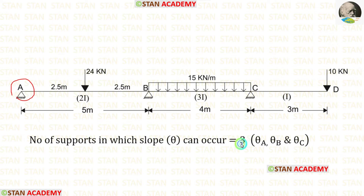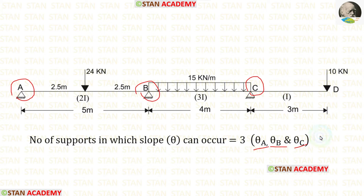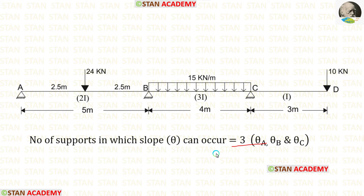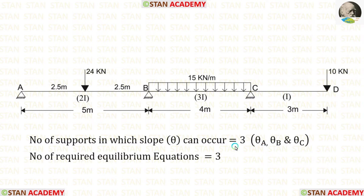At point A there is theta A, at point B there is theta B, and at point C there is theta C. So in this analysis, there are 3 unknowns. If we calculate these 3 unknowns, we can easily find the final moments. To find these 3 unknowns, we need 3 equilibrium equations.